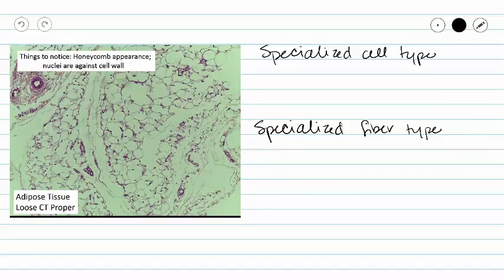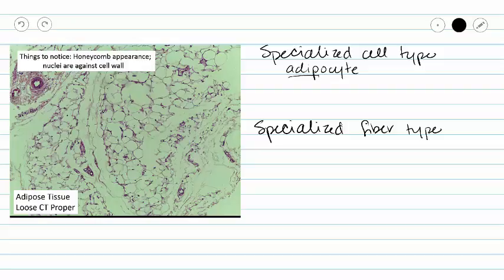Our specialized cell type is called an adipocyte, which literally means fat cell. Adipose tissue is our fat. We're looking at the most cellular kind of connective tissue—you don't see a lot of space between cells. The cells crowd and bump right up against each other with little ground substance between them. We don't have a specialized fiber type for adipose loose connective tissue proper.